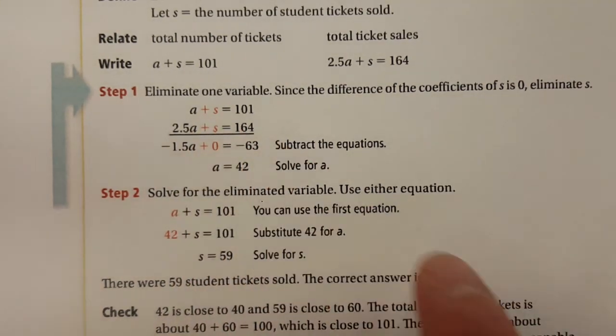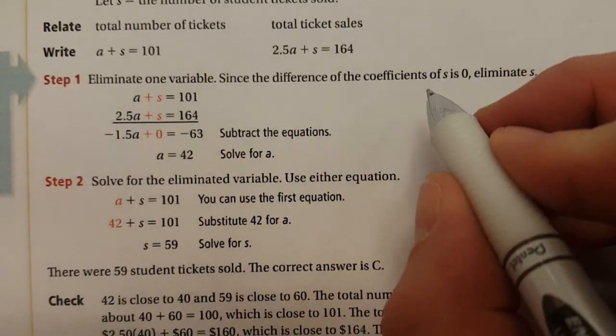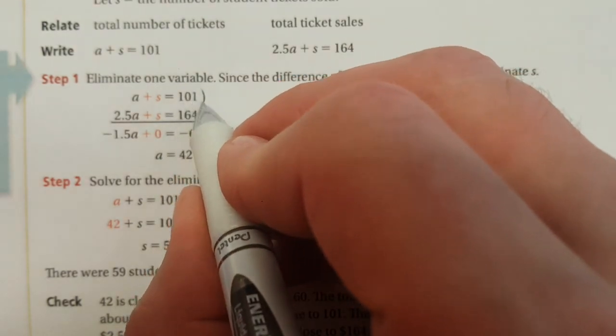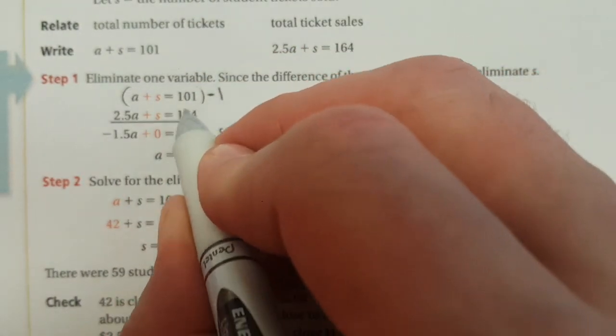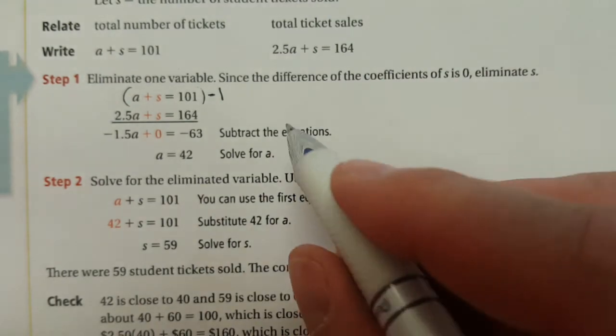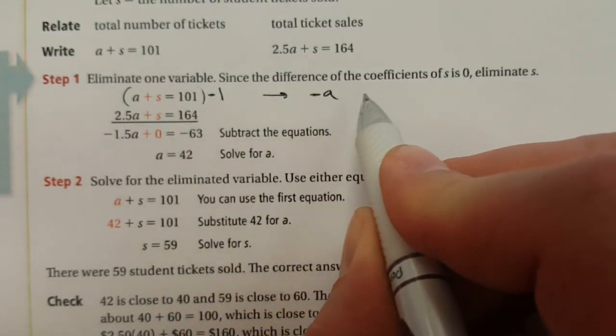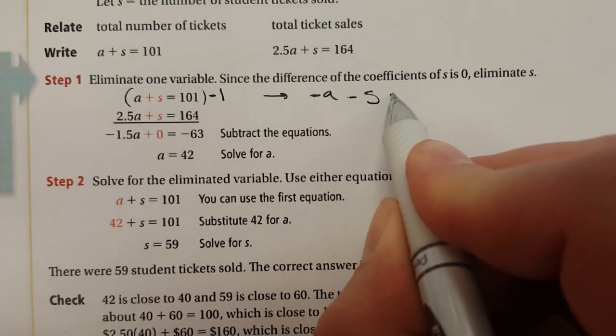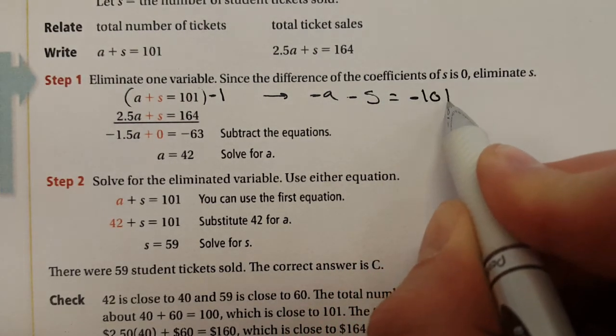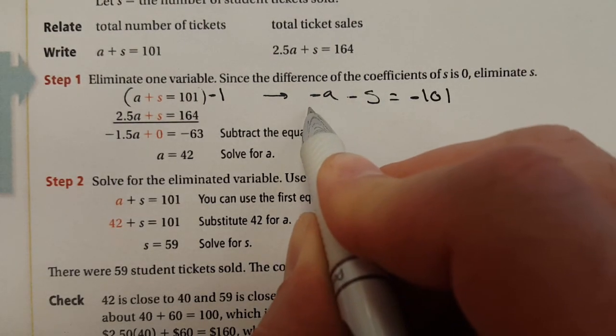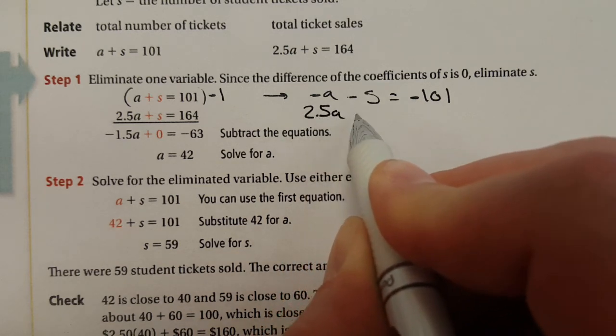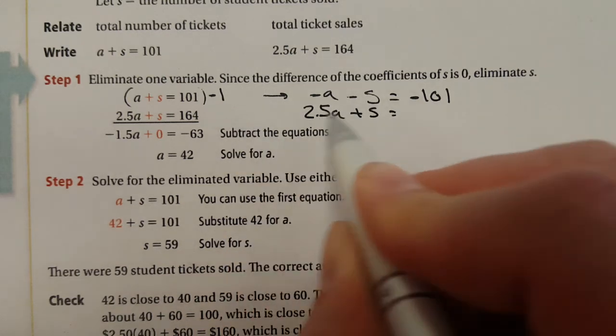So actually what I would do in this case is I would go like this. I would take this one times a negative 1 and then combine it. You'd get the same thing. So actually I'm going to do the work over here. I'd have a negative a then a negative s equals a negative 101. Then once I have opposites, I'm gonna copy and paste that bottom one.